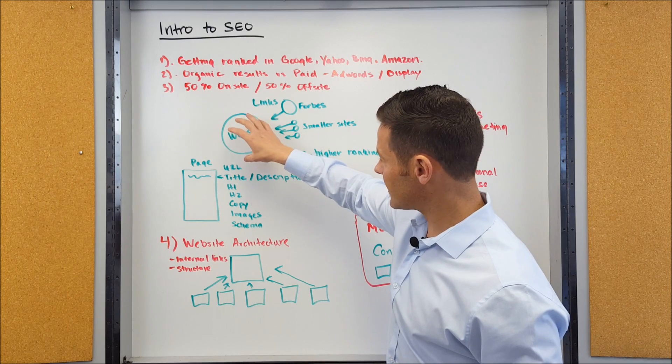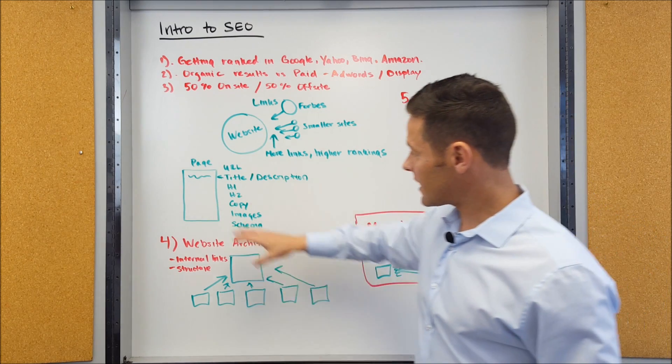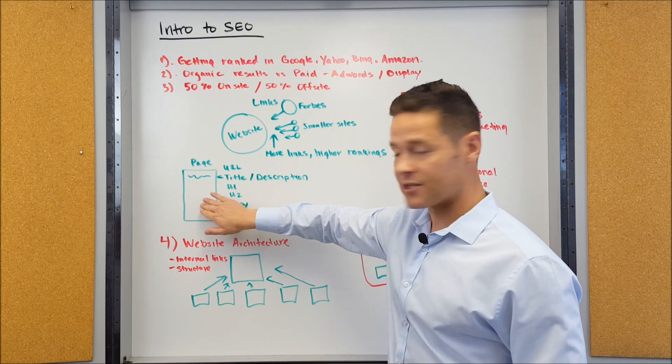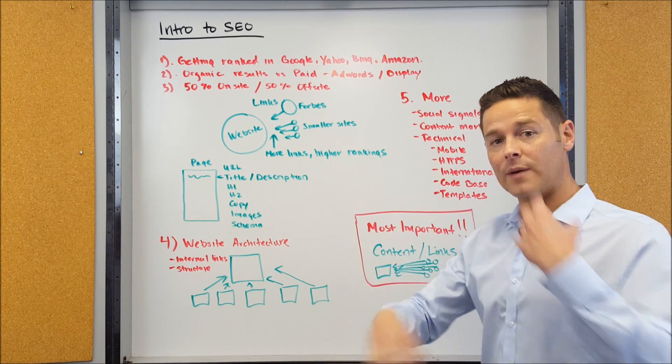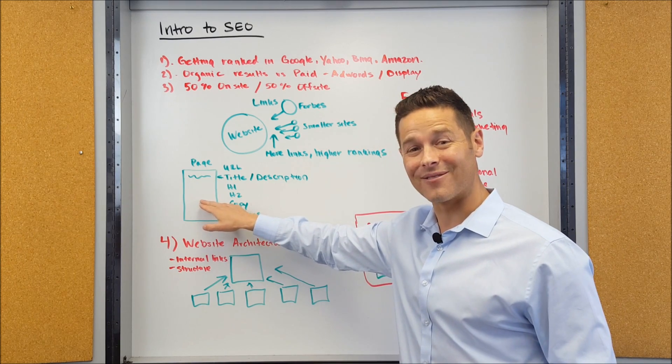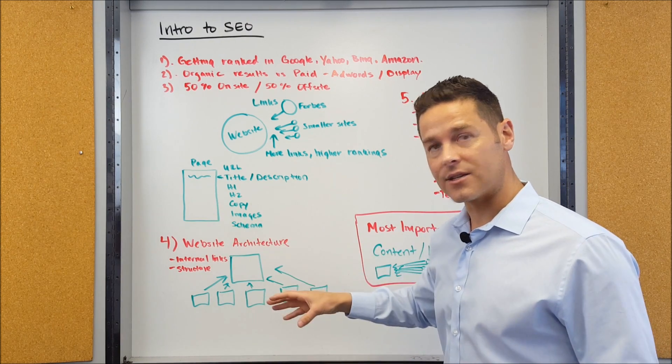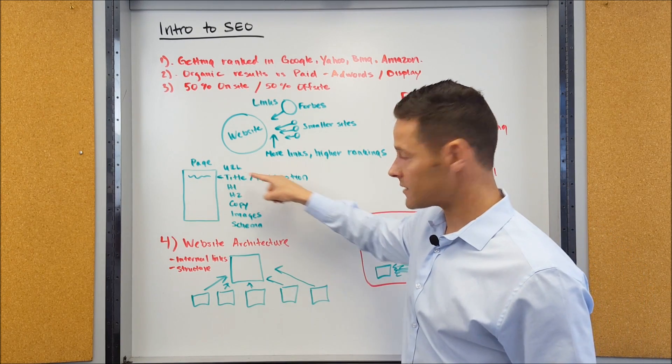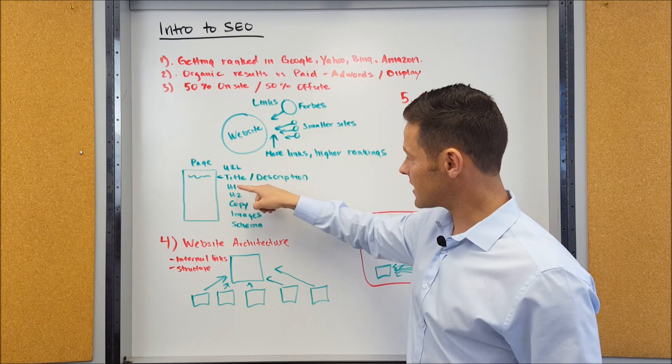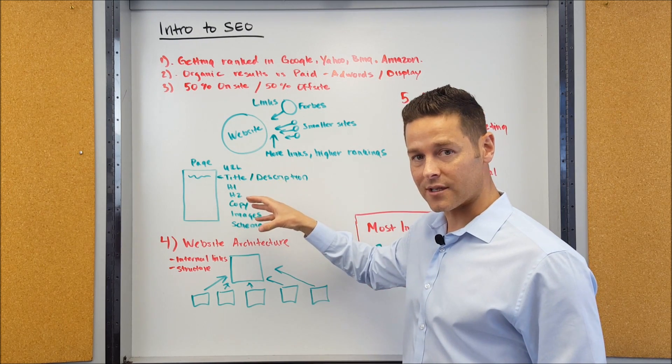Now when it comes to on-site optimization, what you're doing to your actual website, you want to start by thinking about it on the page level. So there's the website as a whole, but there's also the individual page that you want to have ranked in Google. When you look at an individual page, the main things you're looking at are the URL, does it have a keyword in it? The title of the page and the meta description of the page, do those have keywords in it?